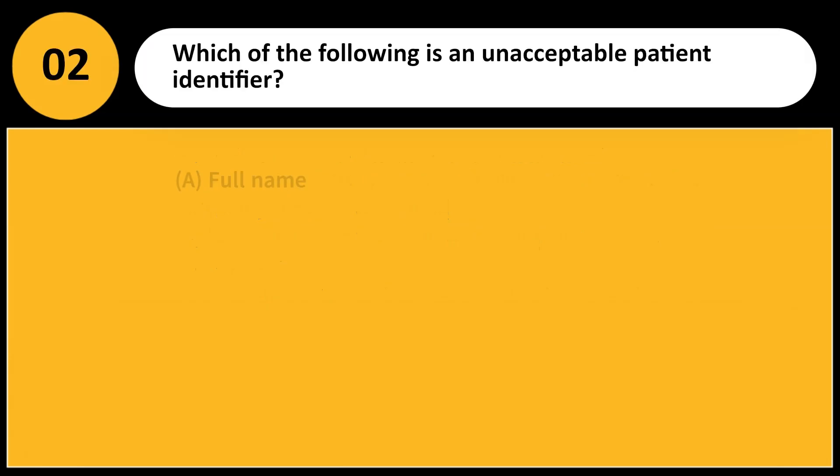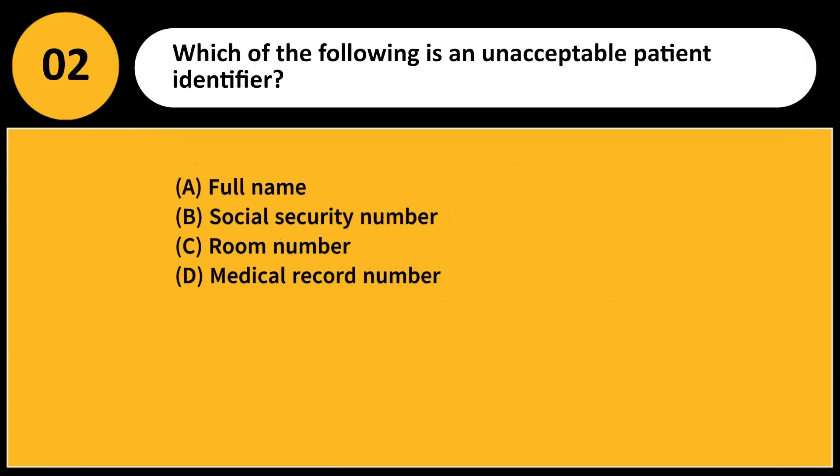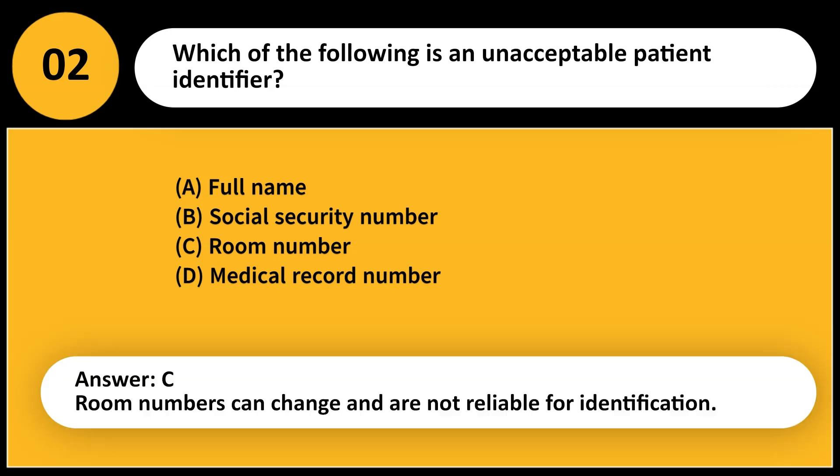Which of the following is an unacceptable patient identifier? A. Full name. B. Social security number. C. Room number. D. Medical record number. Answer: C. Room numbers can change and are not reliable for identification.